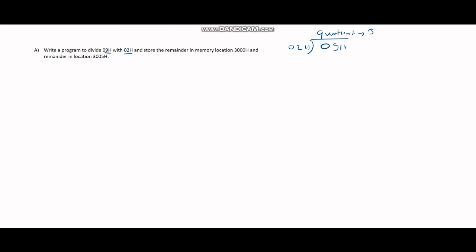Sorry, it should have been quotient here. So quotient in 3005H and remainder in 3000H.